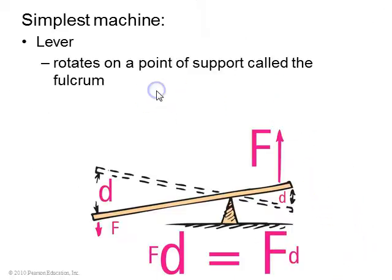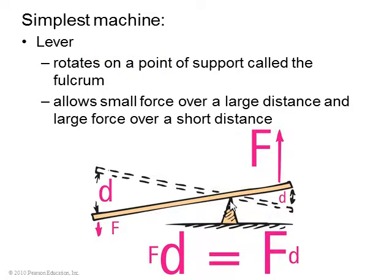The simplest machine is a lever, which rotates on a point of support called the fulcrum, right there. And it allows a small force over a large distance, D, to be converted to a large force over a small distance. Again, obeying this rule: fd input equals fd output.